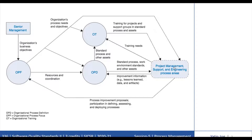The possible improvements to the organization's processes are obtained through various sources. These activities include process improvement proposals, measurements of the processes, lessons learned in the implementation of the process, and results of the process appraisal and product evaluation activities. All of these contribute as input to the process improvement.